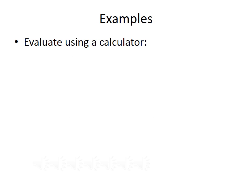Let's evaluate logarithms using a calculator. First, we want to evaluate the natural log of 5 divided by 3. On a Texas Instruments graphing calculator, press the ln button, open parenthesis, 5, close parenthesis, divided by 3. If you're having difficulty, please ask your instructor for assistance. When we evaluate that, we should get 0.536.